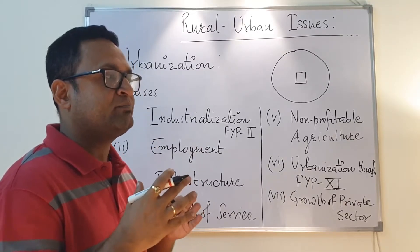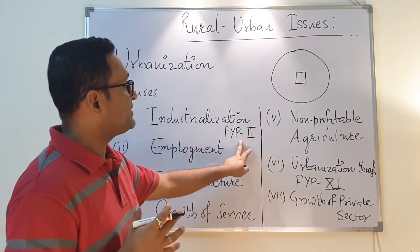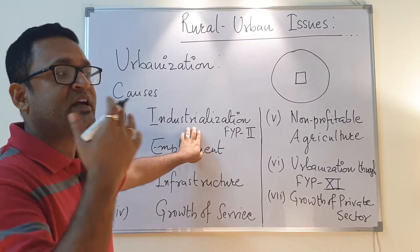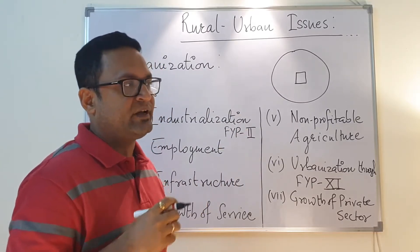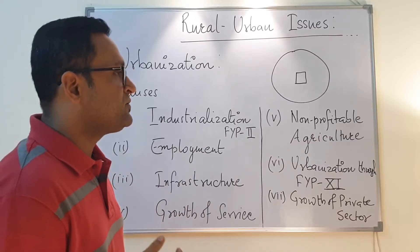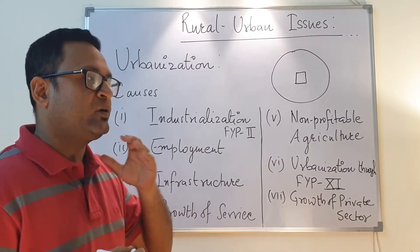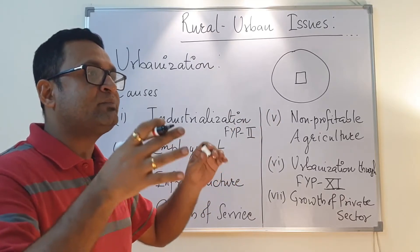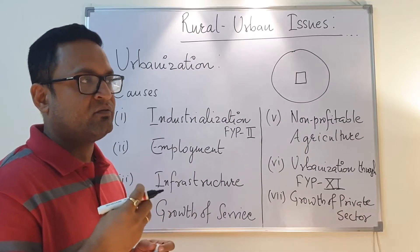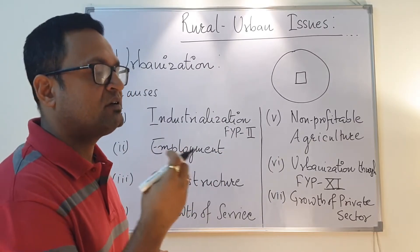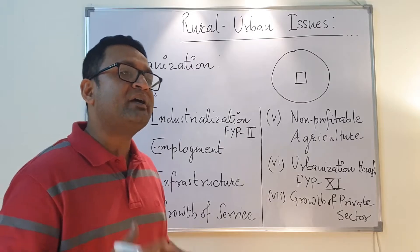After independence, the first Five-Year Plan stressed on agriculture, so there was no massive urbanization at that point. Urbanization really took place during the second Five-Year Plan, around 1956 to 1961, when industrialization was the prime stress area. A lot of industries were set up and big companies came, and these places became seeds of employment generation. Industrialization was one of the biggest reasons for urbanization and still remains a major reason.